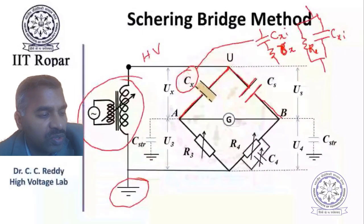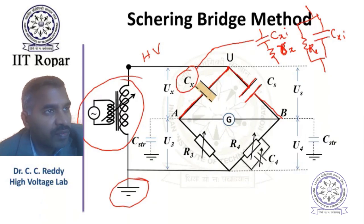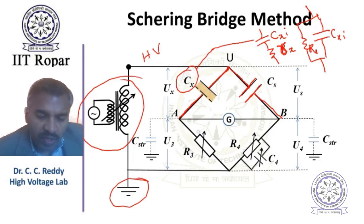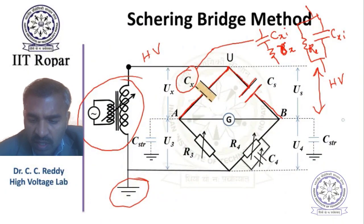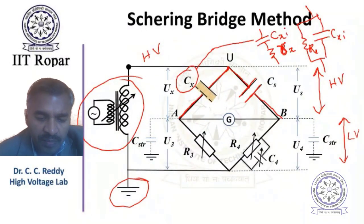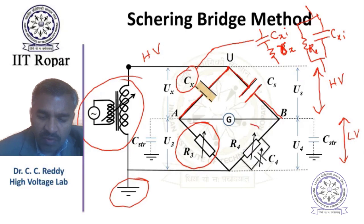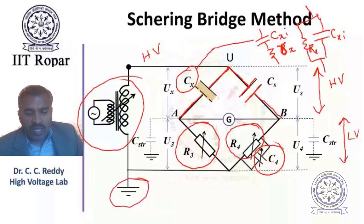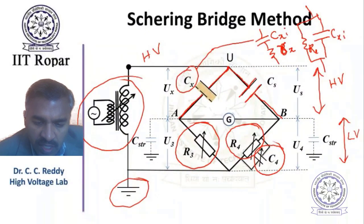Cs is the standard capacitance - a standard high voltage capacitance that should be highly accurate. Therefore, a single unit, gas-insulated capacitor should be used. In the low voltage arm, the bottom part is the LV section. There is a resistor R3 which is variable, a resistor R4 which can be varied, and a capacitance C4 which can also be varied. This is the bridge configuration.